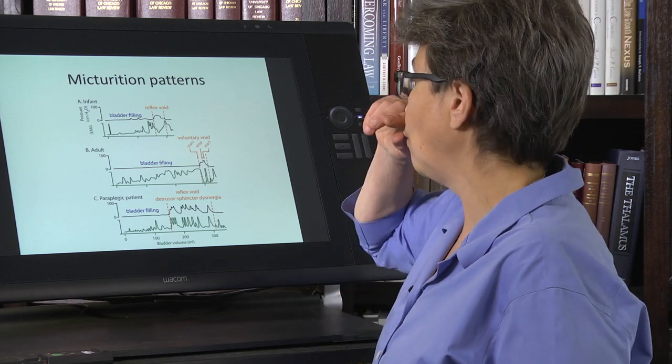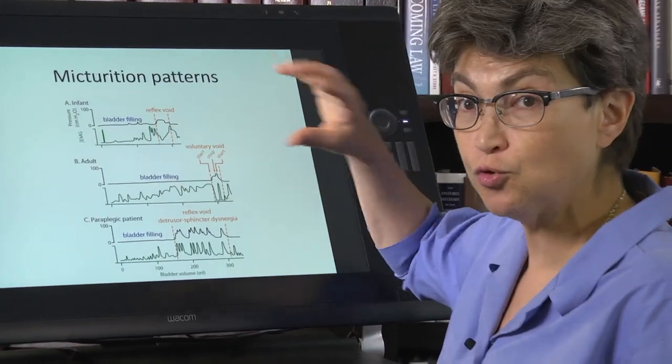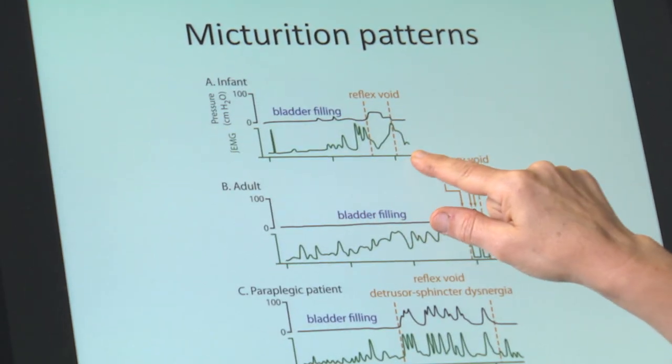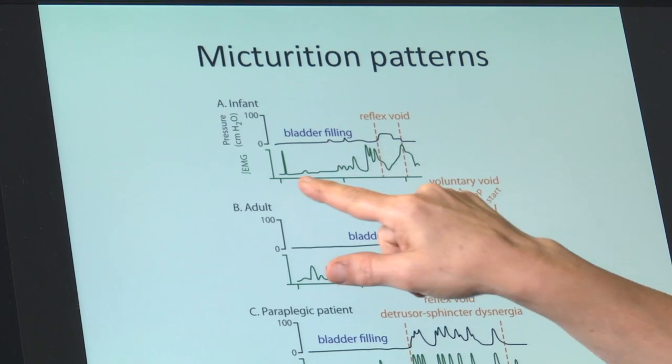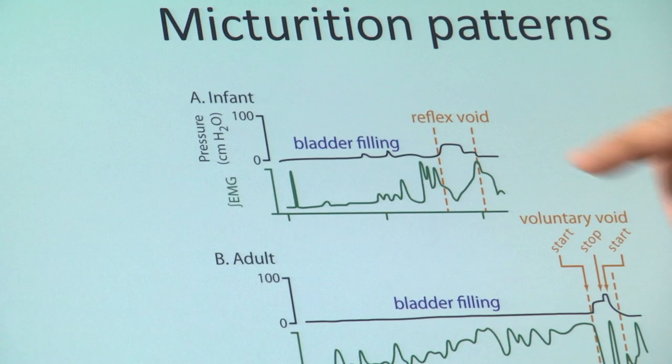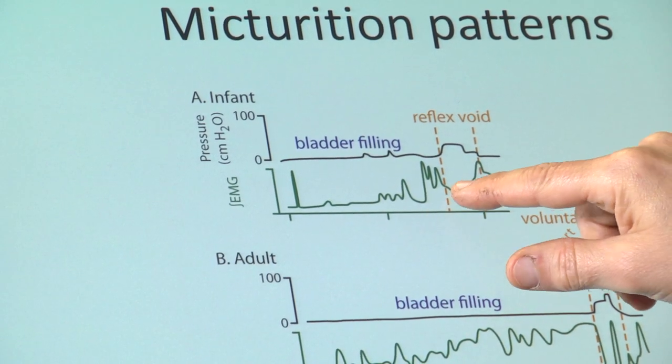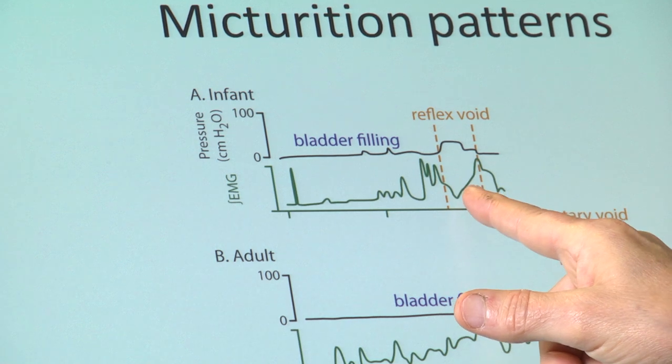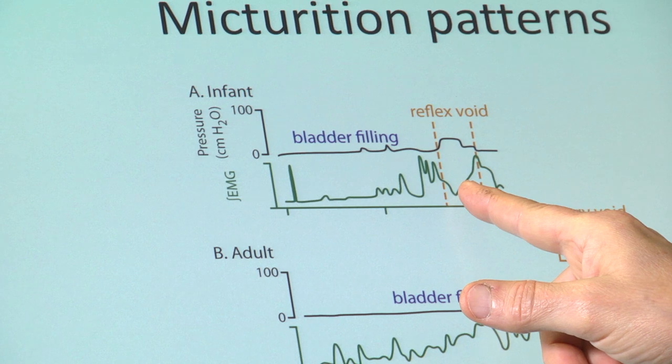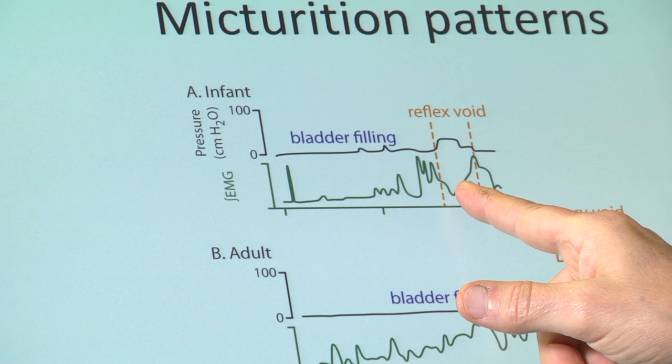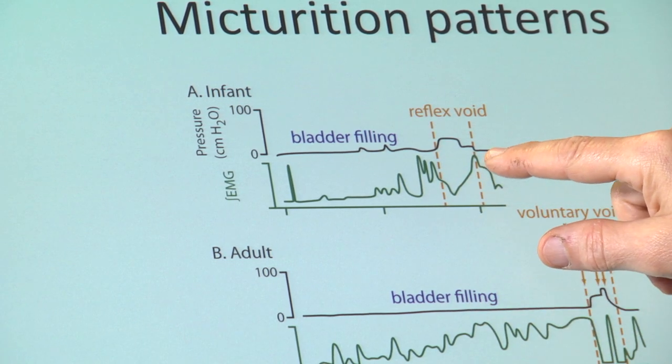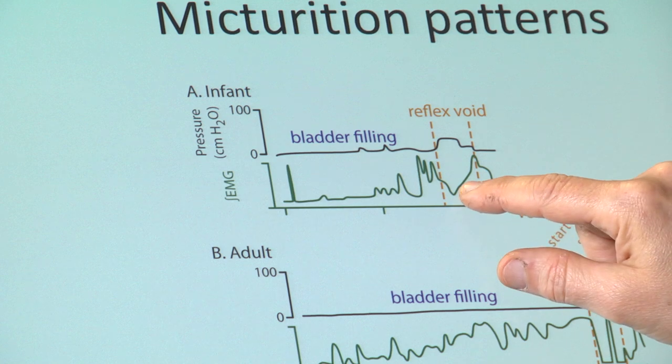So let's just compare three things. We're going to zoom in first on up here. This is the situation with an infant. The bladder fills, and when the bladder gets to a certain level, there is simply a reflex, a reflex micturition, a reflex void. And that is information coming from the detrusor is going to contact detrusor preganglionics, and the external urethral sphincter is relaxed.